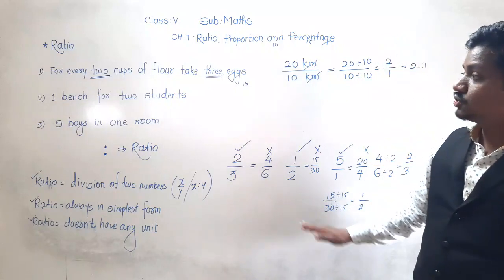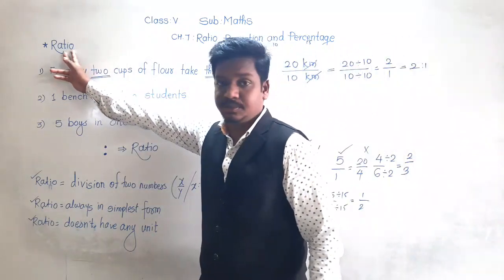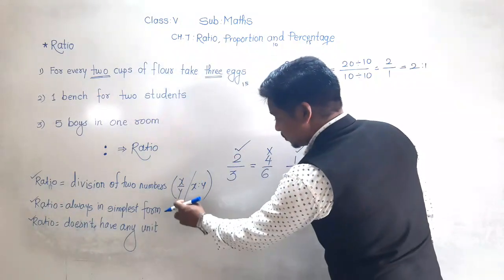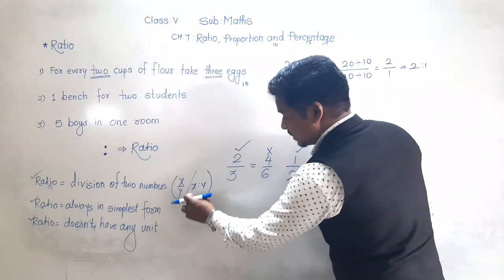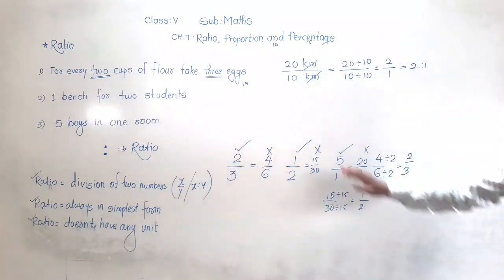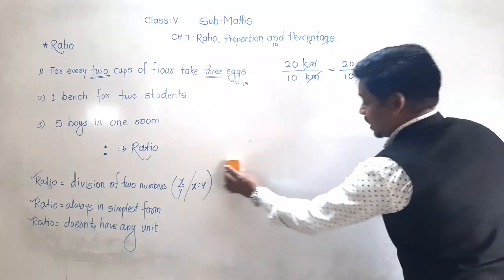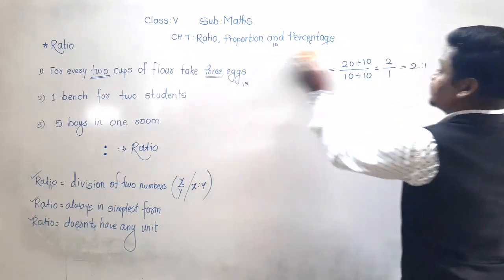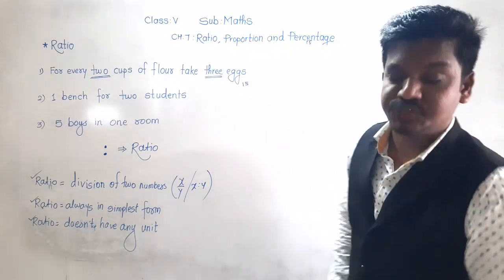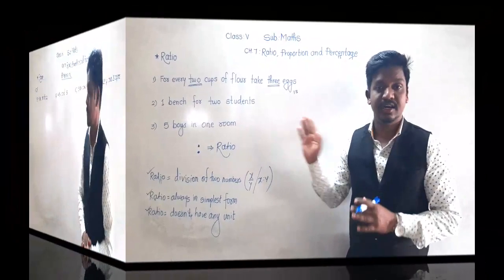So these are the three aspects of ratio which you have to keep in mind: ratio means division, ratio means simplest form, ratio means no unit. Write the concept name and these three aspects in your notebook, and in bracket write x upon y is same as x is to y. Pause the video and write that.